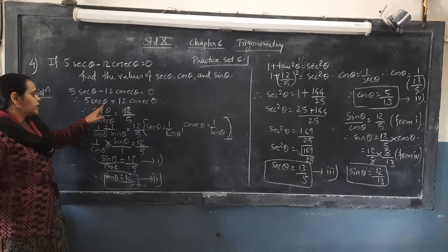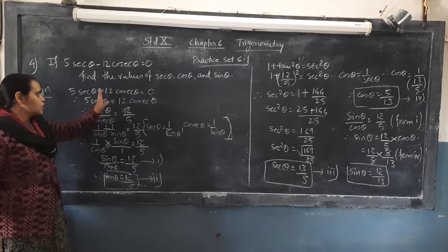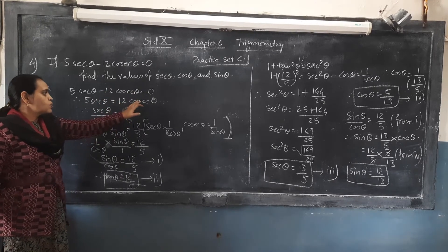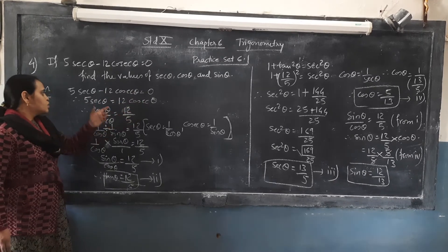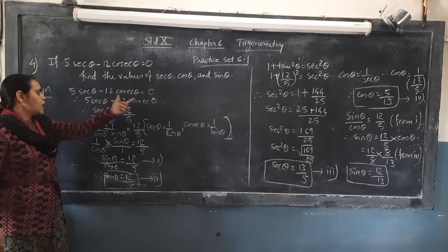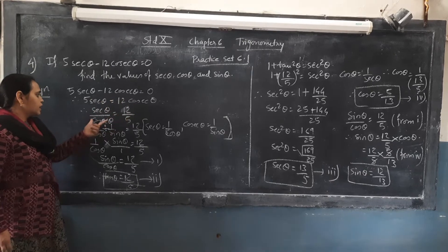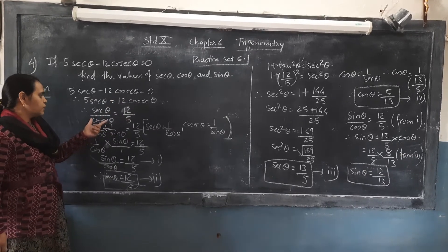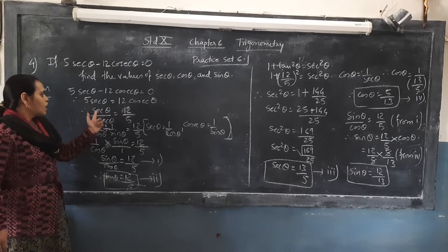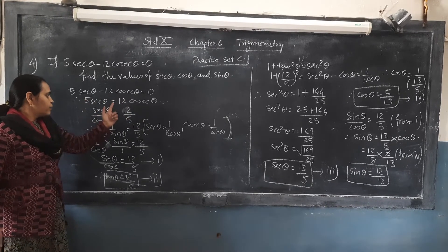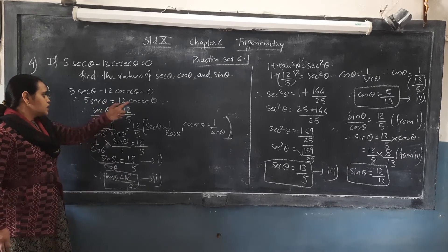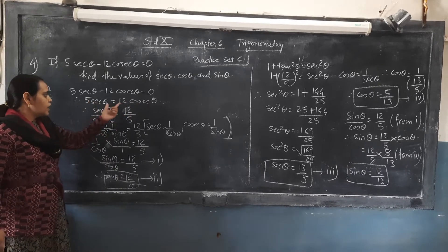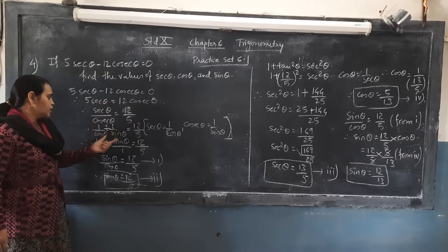5·sec θ equals 12·cosec θ. We transfer cosec θ from the right-hand side, giving us sec θ divided by cosec θ equals 12 upon 5.